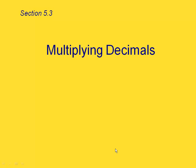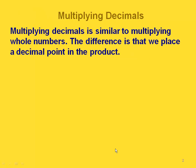This is section 5.3, multiplying decimals. Multiplying decimals is similar to multiplying whole numbers. The only difference is that we have to place a decimal point in our product.